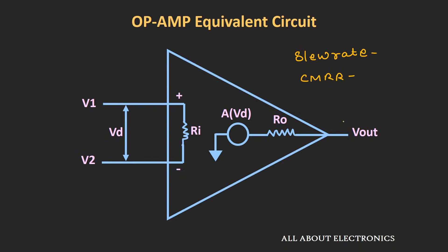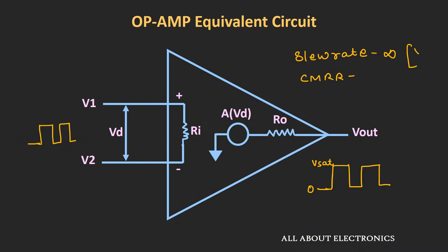We will see these characteristics in detail in separate videos, but let us see the basics. The slew rate is basically how fast the op-amp is able to reach its final value, which is particularly useful when applying a square wave. The ideal op-amp should be able to go from zero to V-sat in zero time, so the slew rate should be equal to infinity. Generally, slew rate is defined in units of volts per microsecond. For the common mode rejection ratio, if we apply the same input voltage to both V1 and V2, the difference is zero and the output should be zero.